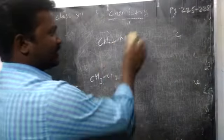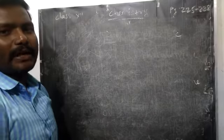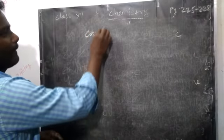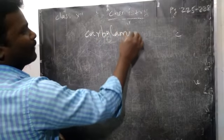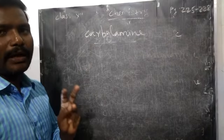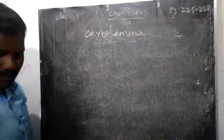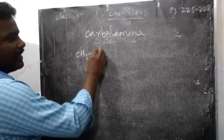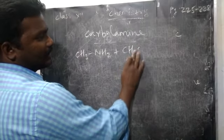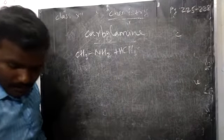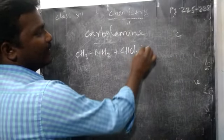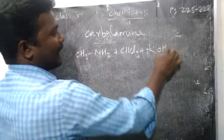Now some preparation of isocyanide. The well-known preparation already we have studied in the previous lesson: carbylamide reaction. Carbylamide reaction means what type of catalyst will you take? Chloroform and also potassium hydroxide. So here, ethylamine — primary amine, CH3NH2 — is treated with chloroform, CHCl3.